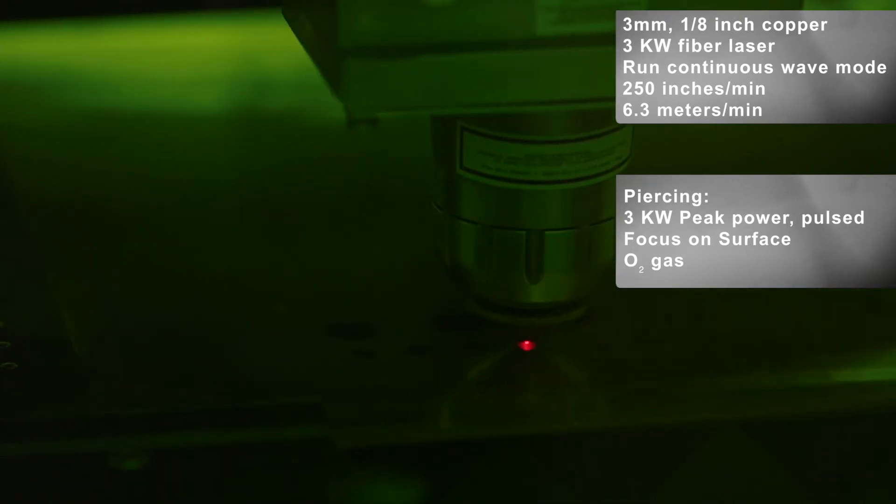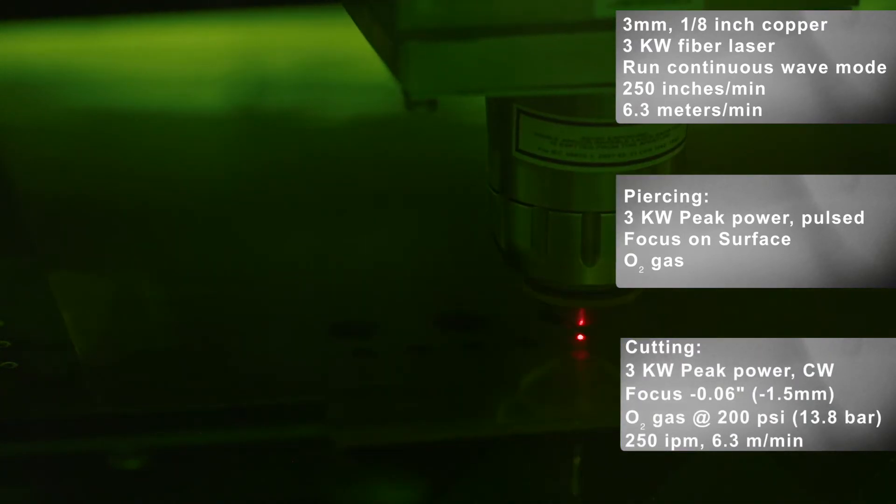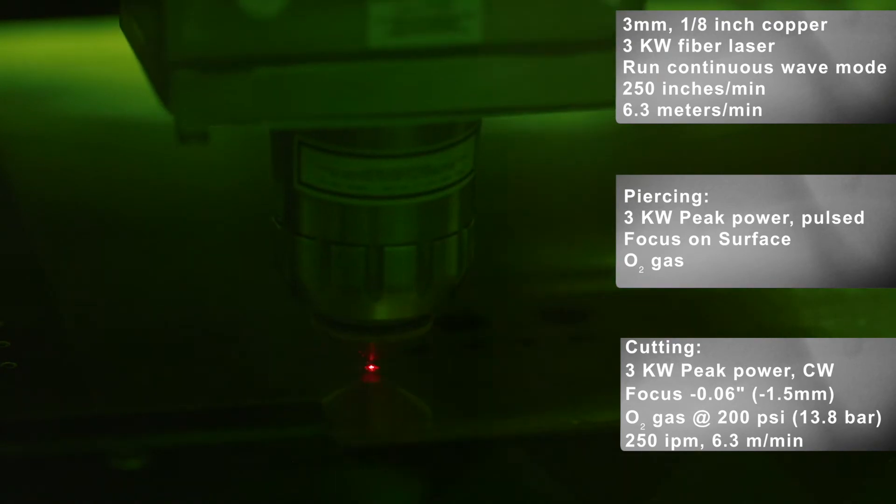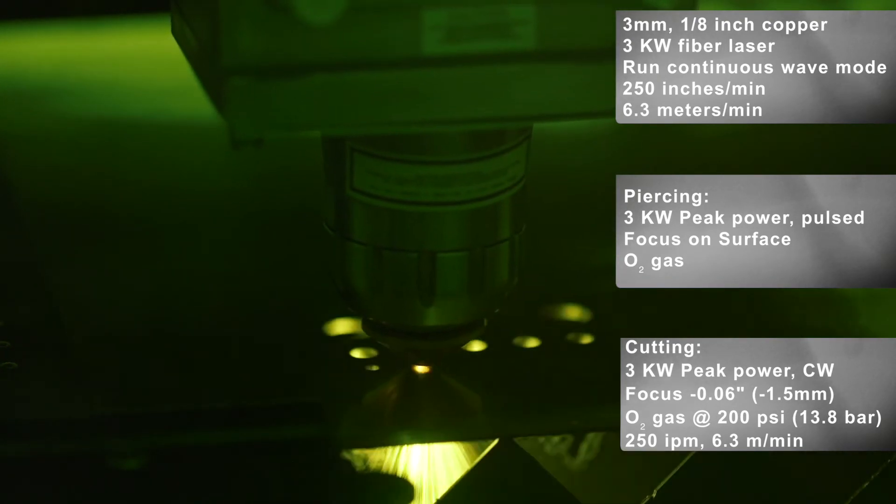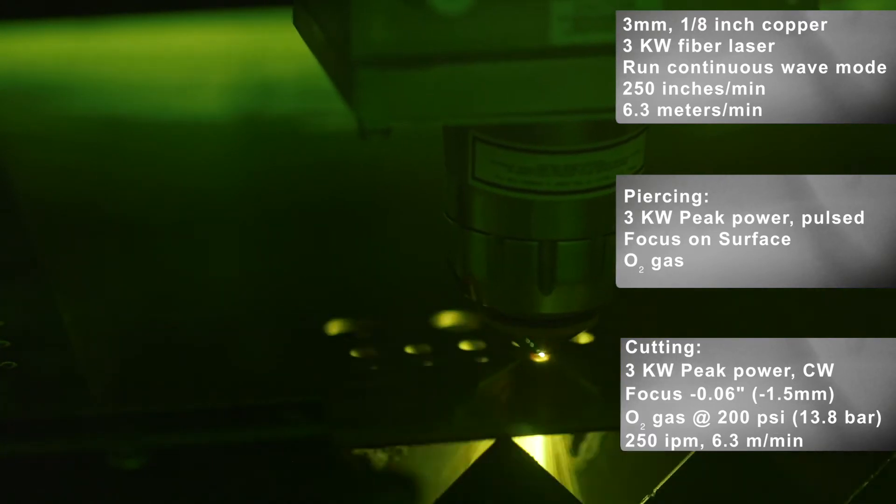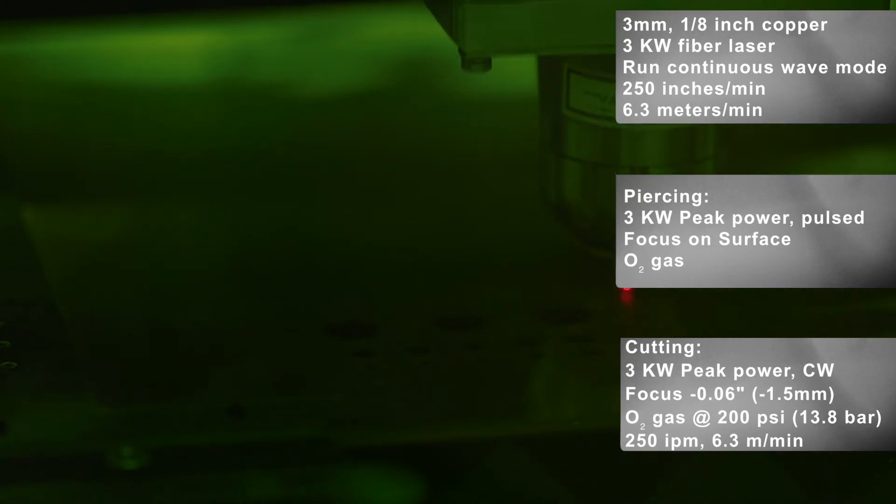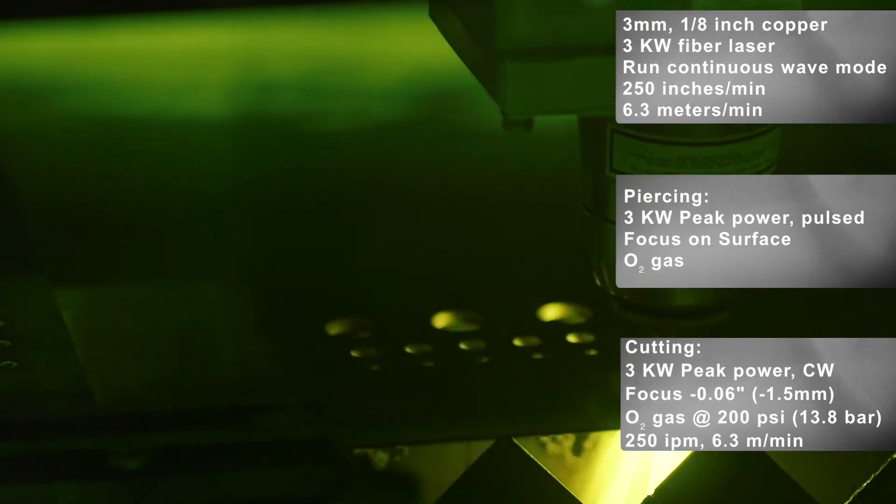For the cutting stage, the focus is down about 0.06 below the surface of the material, and the laser is in the continuous wave mode, or CW mode, and running it at 250 inches per minute, or about 6.3 meters per minute.